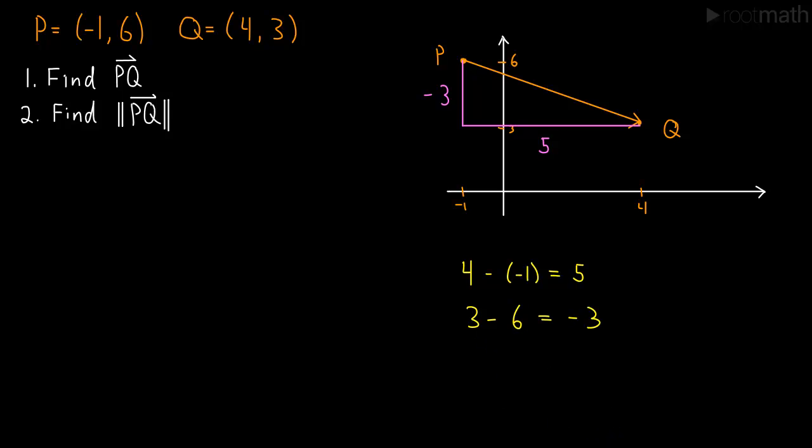So we found our new vector. The vector PQ, the answer to one, its X component as we can see is 5 and its Y component is -3. So that's our vector PQ = <5, -3>.